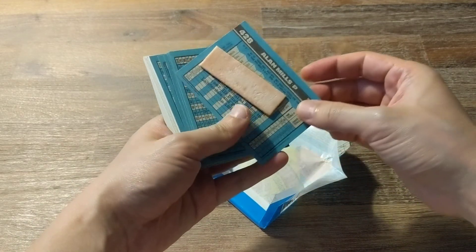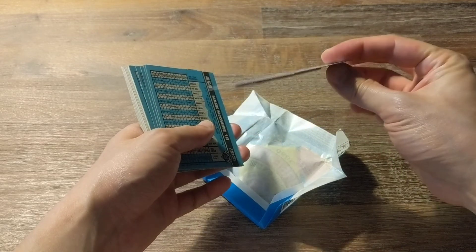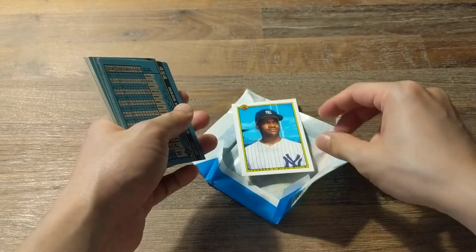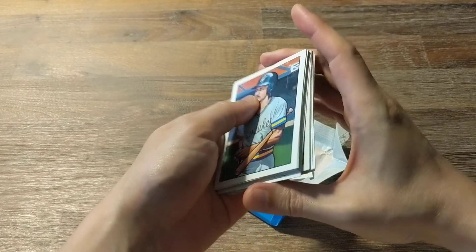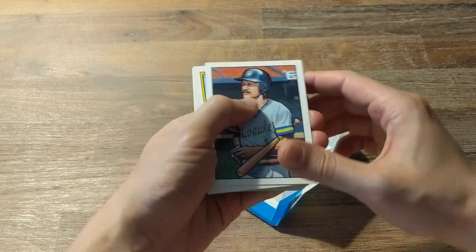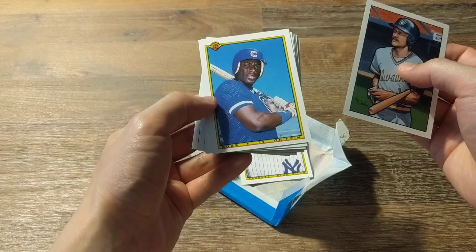I haven't gotten anything good. Alan Mills rookie card ruined by the gum. Okay, so we've got Robin Yount, Ty Griffin, Dwight Evans, Glenn Davis, Nelson Liriano.